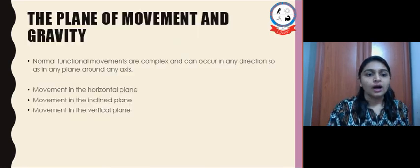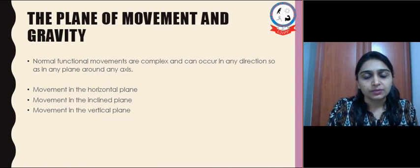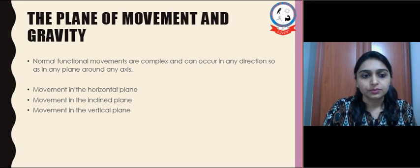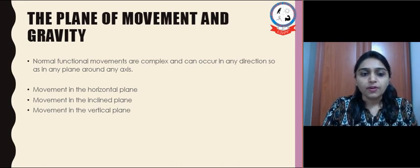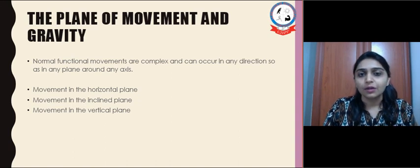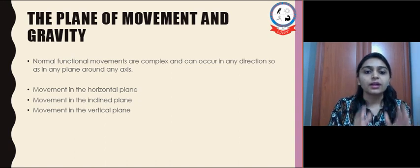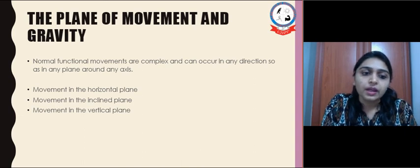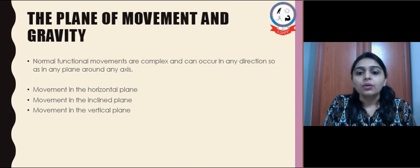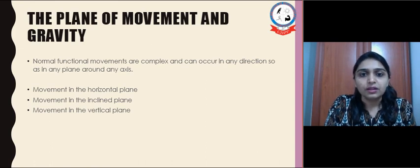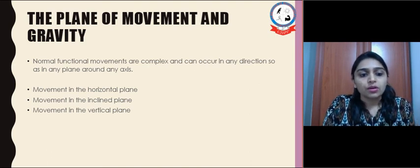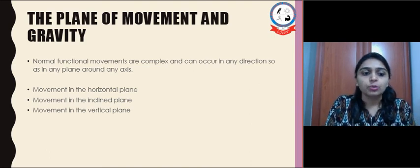The last thing we need to know is the plane of movement and gravity. Gravity affects each and every body part in a downward direction. Normal functional movements are very complex and cannot be described as occurring in a single axis or plane — there can be more than one axis and more than one plane involved. To understand them, we divide movement into: movement in horizontal plane, movement in inclined plane, and movement in vertical plane.